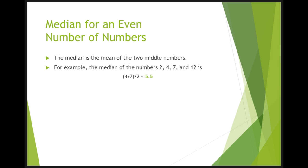However, when there is an even number of numbers in the distribution, the median is calculated by taking the mean of the two middle numbers. So for instance, if a sample consists of four scores, 2, 4, 7, and 12, the median is the average of 4 and 7, which is 5.5.